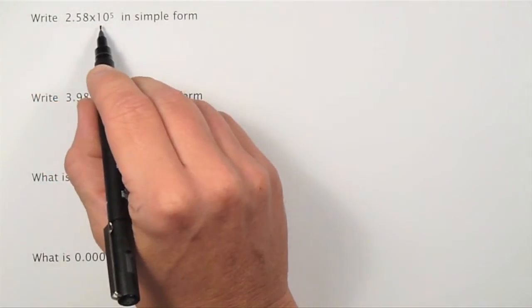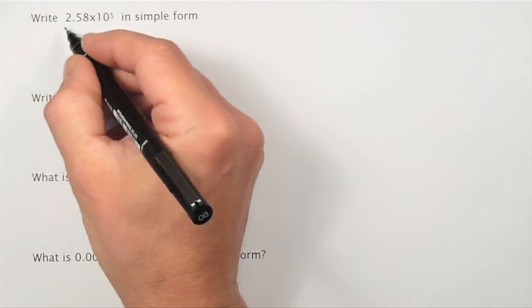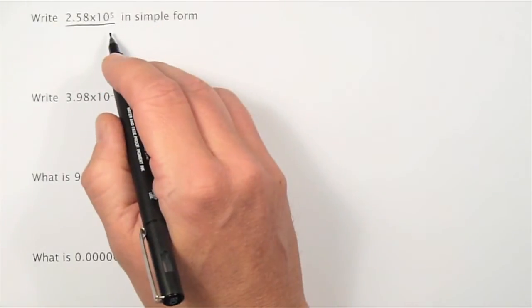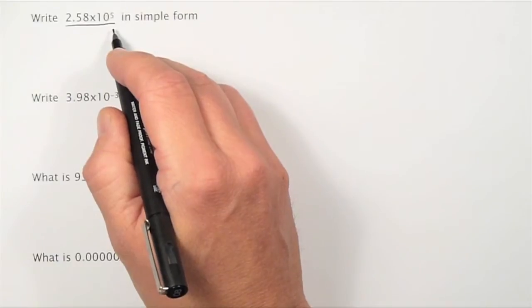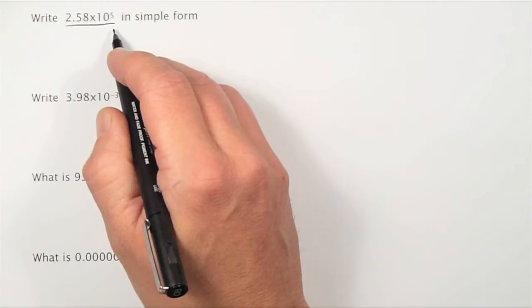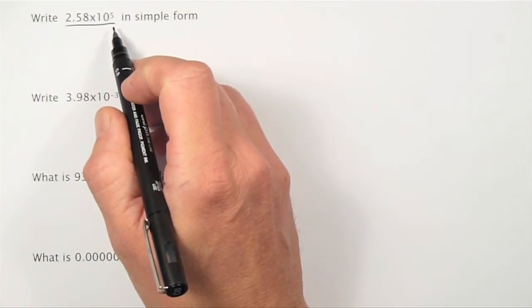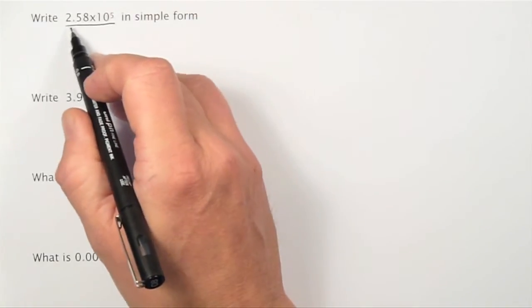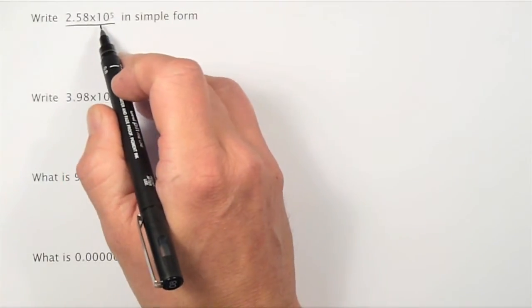Write 2.58 times 10 to the power of 5 in simple form. This number is in standard form. In this video, I'm going to show you how to deal with numbers like this. I'm not going to give you a full mathematical explanation, just some tips on how to handle these numbers. Standard form is a way of writing any number as a number between 1 and 10 multiplied by an integer power of 10.